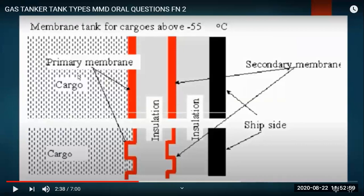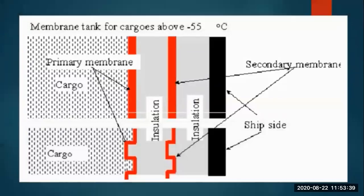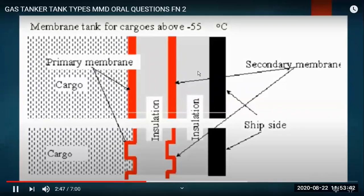This is a typical diagram for a membrane tank. You have the liquid cargo space, then the primary membrane made of invar or nickel steel, then insulation, then the secondary barrier, then more insulation between the secondary barrier and the hull, which is perlite or polyurethane foam. For cargo more negative than minus 55 degrees Celsius, you can also load in this tank.